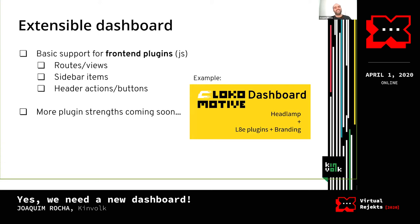The plugin API is still very experimental and limited, but right now you can add new routes or modify existing ones, add new views, add items to the sidebar, and add what we call 'header actions' — for example, when you go to a pod you might have actions like delete or see the cost of the pod. More capabilities will come.